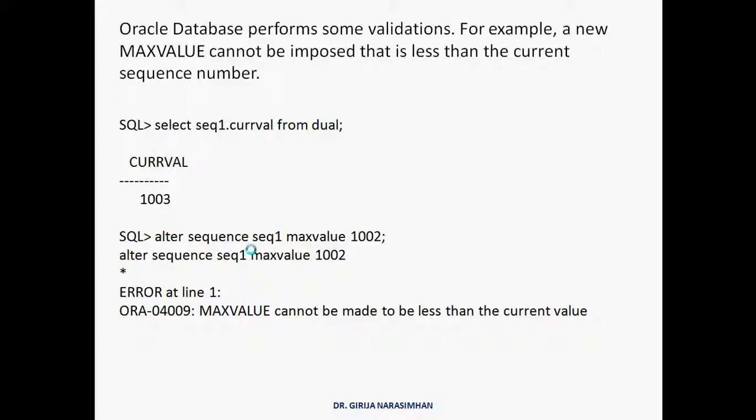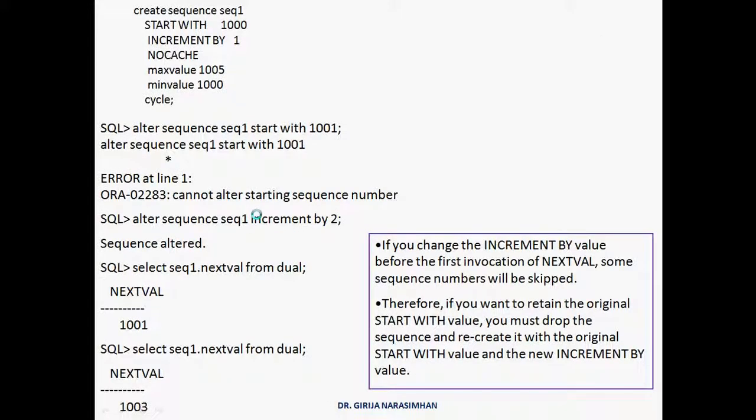Oracle database performs some validation. For example, a new max value cannot be imposed that is less than the current sequence number. For example, now I am seeing what is current value of the sequence: 1003. I am altering sequence max value to 1002. Actually current value is what? 1003. Our max value is what? Our max value is 1005 here. But I am changing it to what? 1002.